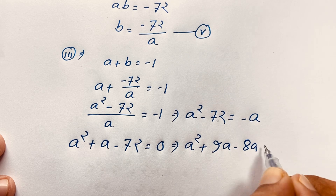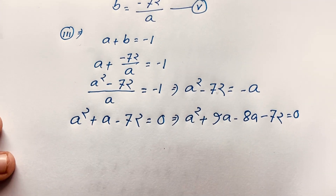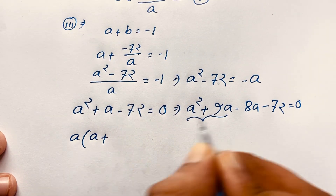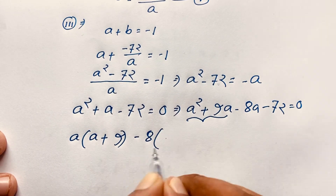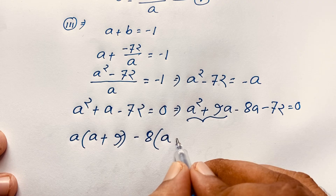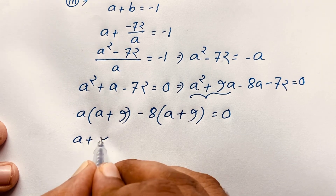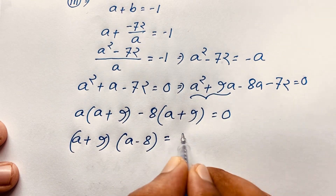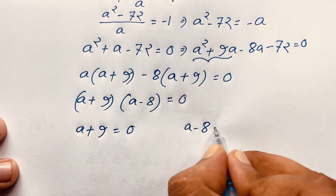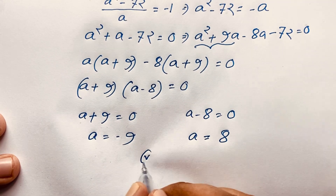Factoring by the middle term method: a squared plus 9a minus 8a minus 72 equals zero, since 9 times 8 equals 72 and 9 minus 8 equals 1. Taking a as common from the first pair gives a(a plus 9), and taking negative 8 as common from the second pair gives negative 8(a plus 9). So (a plus 9)(a minus 8) equals zero, giving a equals negative nine or a equals positive eight.